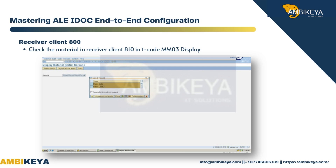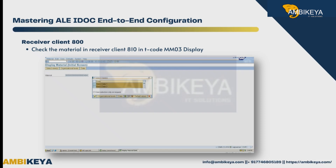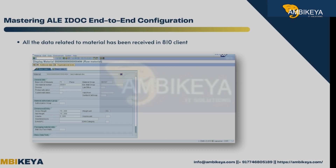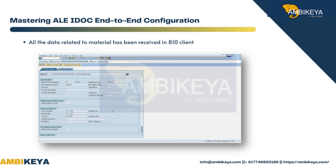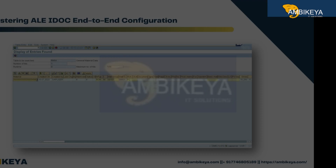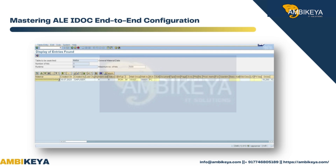Check the material in receiver client 810 using T-code MM03 display. All the data related to material has been received in client 810. Thank you.